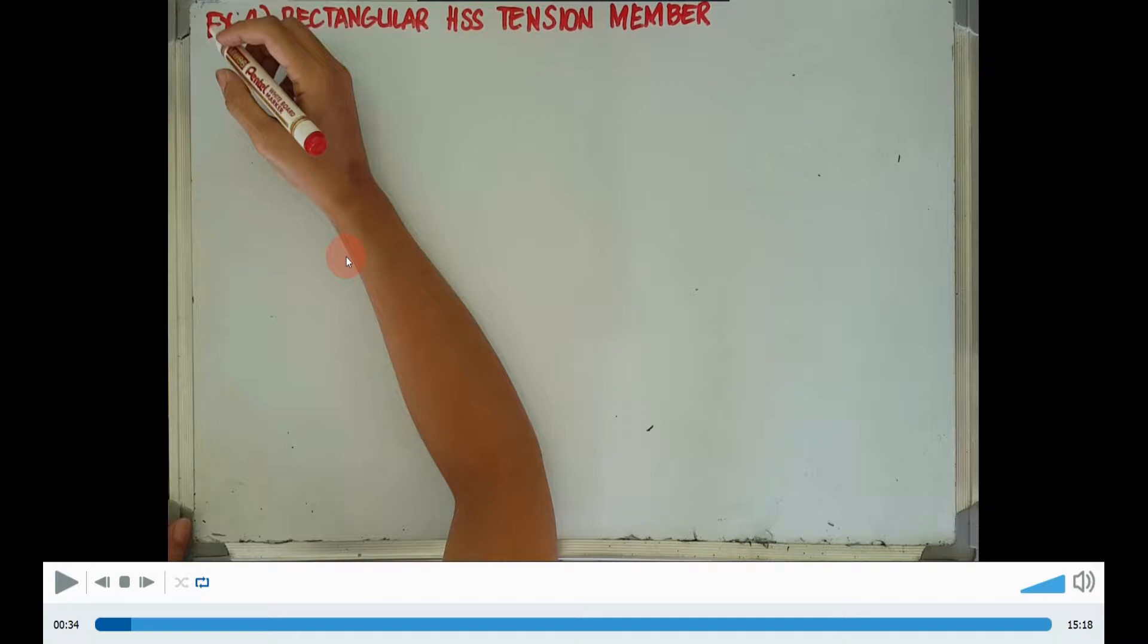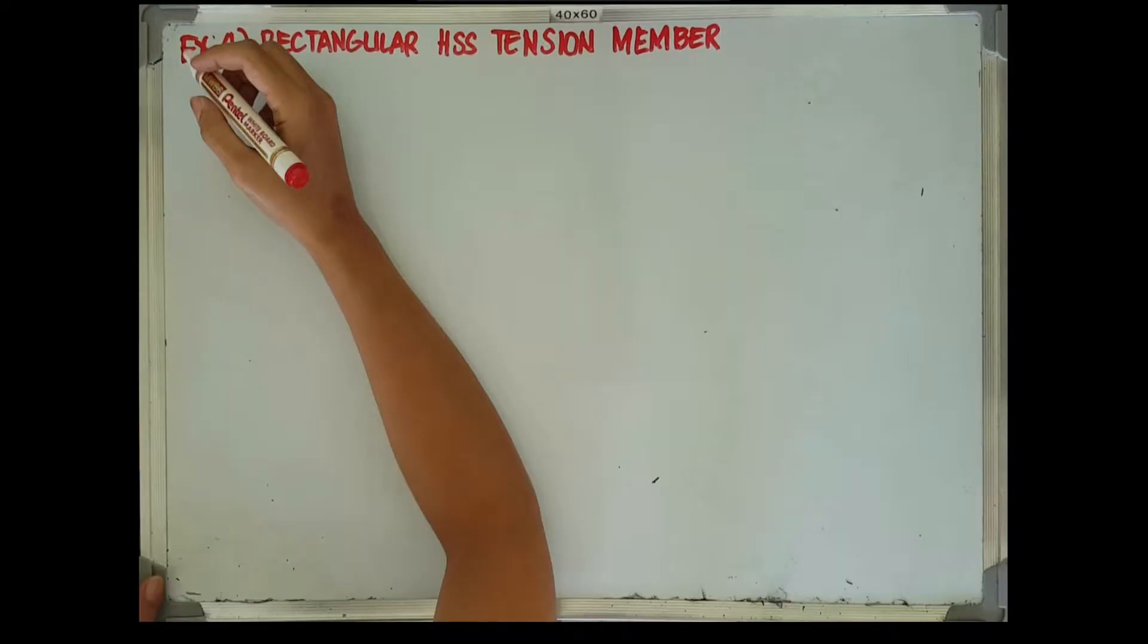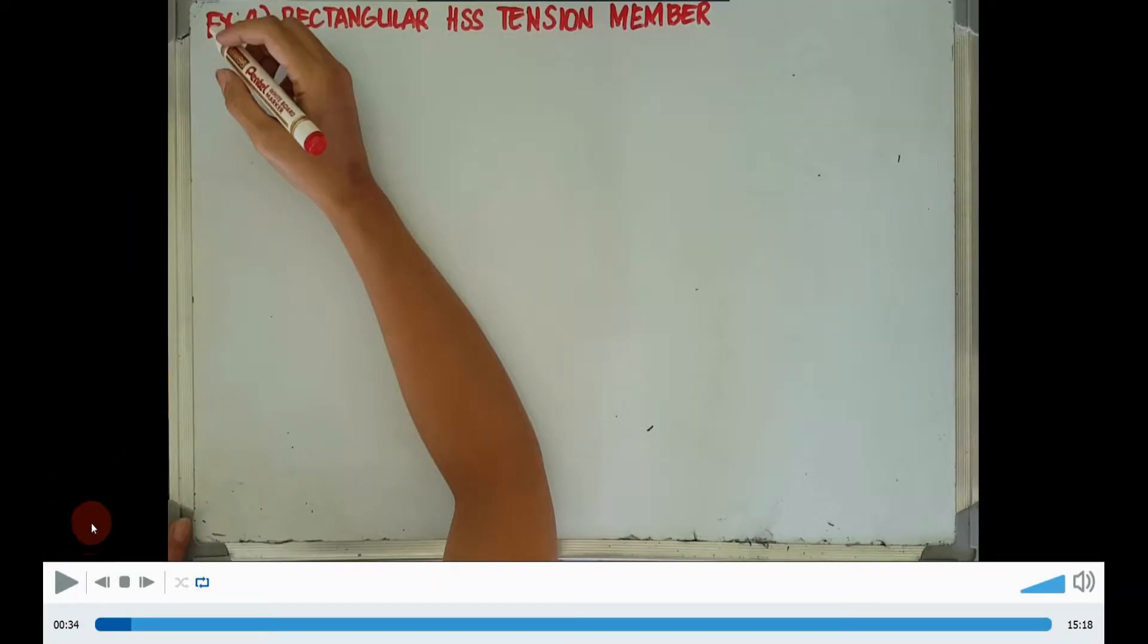For our example number 4, we will try to analyze a rectangular hollow structural section tension member, or the HSS.